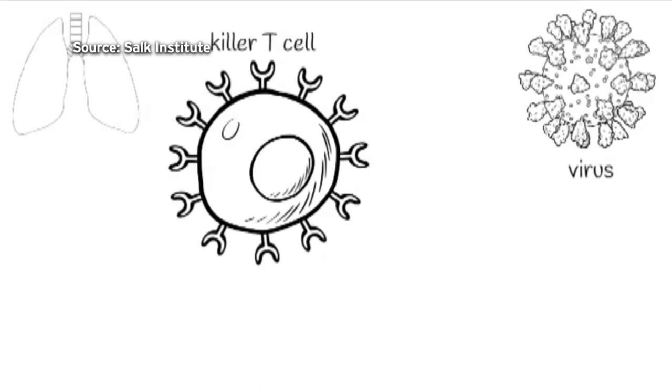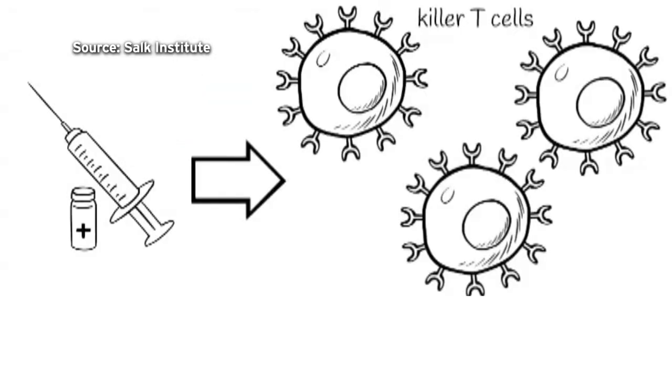A lot of the vaccines that we get, such as the childhood vaccines, the protection they provide are largely based on antibodies. But in some cases, we know that the antibodies may not be enough.